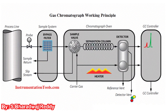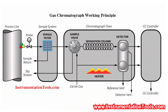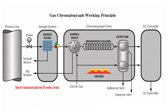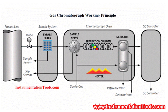All components in the sample gas will be separated in the column. The separated components will travel from the column to the detector individually. The detector will detect the respective component voltage, and thus we measure all individual components in the sample gas.